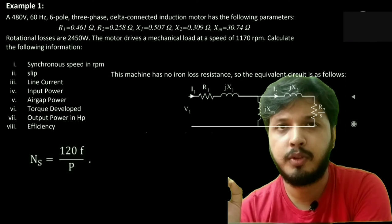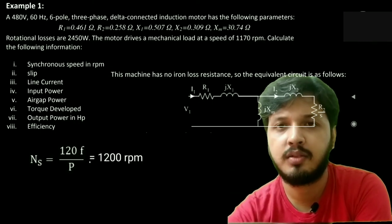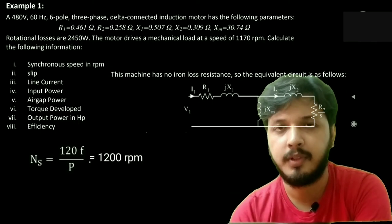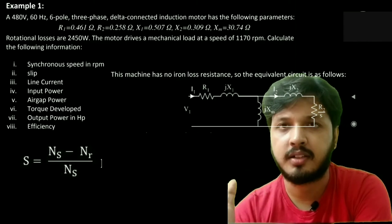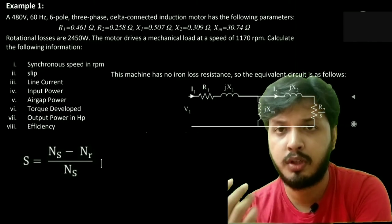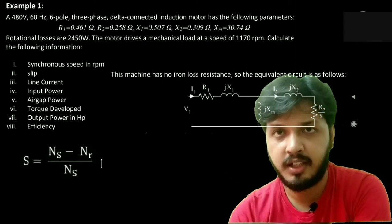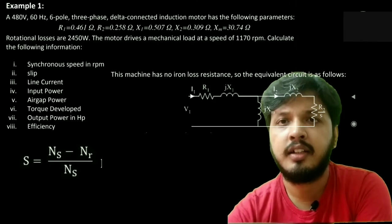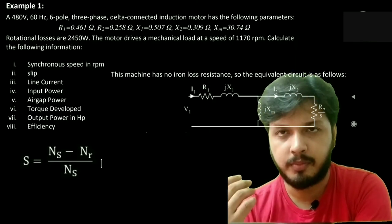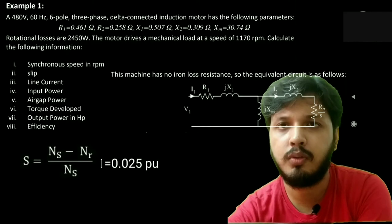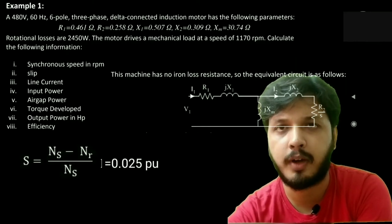Synchronous speed equals 120 f by P. Putting the value of f and P, we will find it's 1200 rpm. Slip equals NS minus NR by NS. NS equals 1200 rpm already we have calculated, and NR is given that 1170 rpm. Putting all this value, we will get slip equal to 0.025.